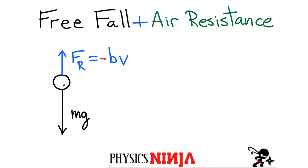We know an object released from rest is going to fall down, so we've already taken the direction into consideration in this diagram. Therefore there is no need for the negative sign. We have the direction of this force and that is the magnitude of that force.